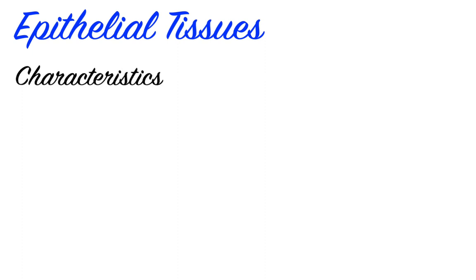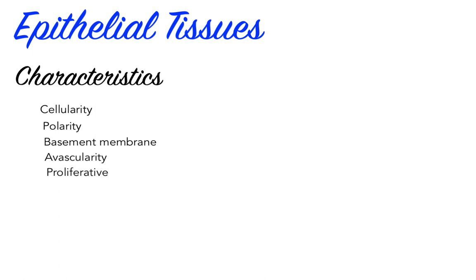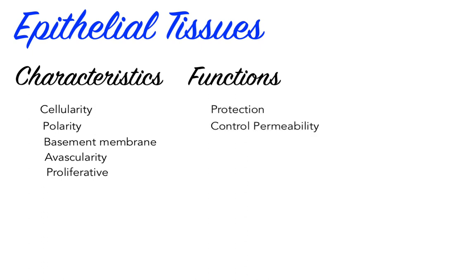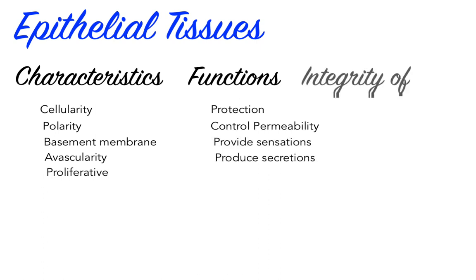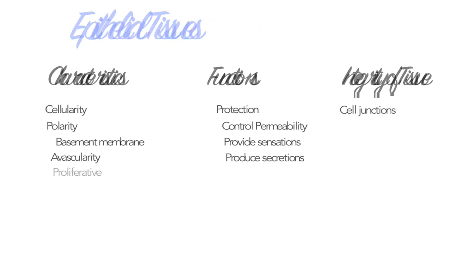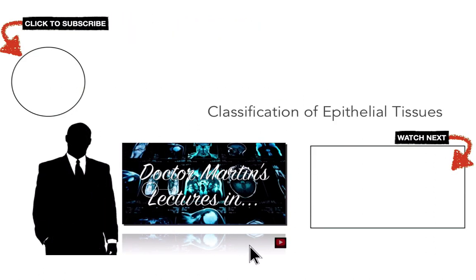In summary, epithelial tissue is characterized by closely bound cells, a free surface exposed to the environment or internal space, attachment to underlying connective tissues by a basement membrane, avascularity, and continual replacement of exposed cells. Epithelial tissues provide protection, control permeability, provide sensation, and produce specialized secretions. Epithelial cells join to one another via tight junctions and desmosomes, and communicate via gap junctions. Microvilli on the free surface greatly increase surface area for absorption or secretion, while motile cilia function to move materials over the surface. Join me in our next lesson as we consider how epithelial tissues are classified.